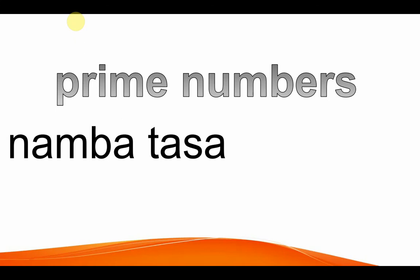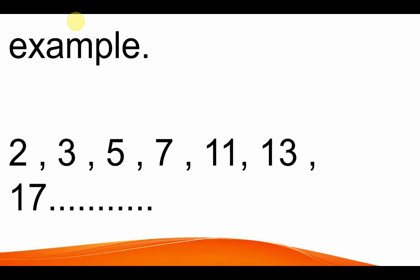The second group is prime numbers. In simple Swahili we call them number tasa. These are numbers that are divisible by two and by themselves. Example, two. One is not prime, two is prime. Because it divides by two and by itself. Two divided by two. Two divided by two equals one. Similarly three. Five, seven, eleven, thirteen, seventeen. Seventeen divided by two equals... seventeen divided by seventeen equals one. You see, it's a prime number.